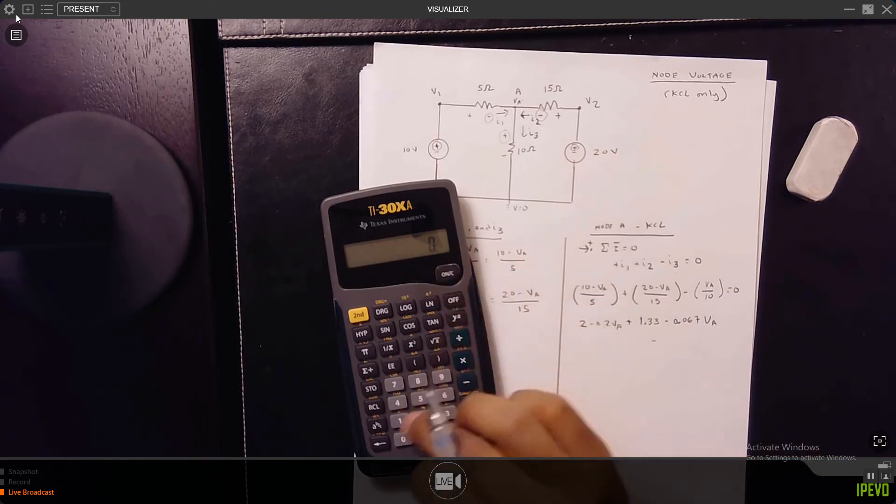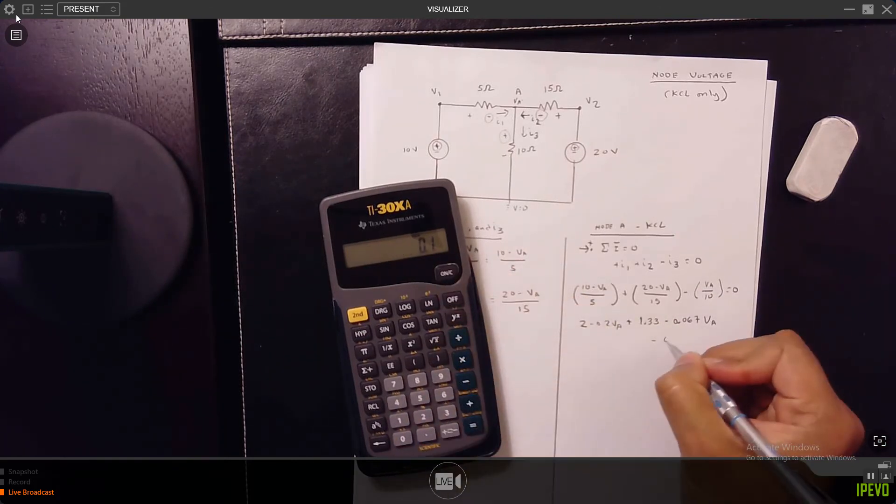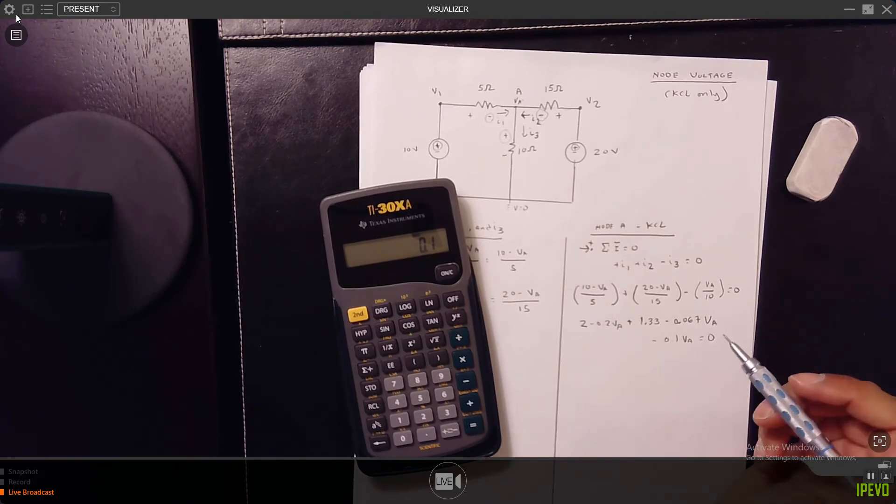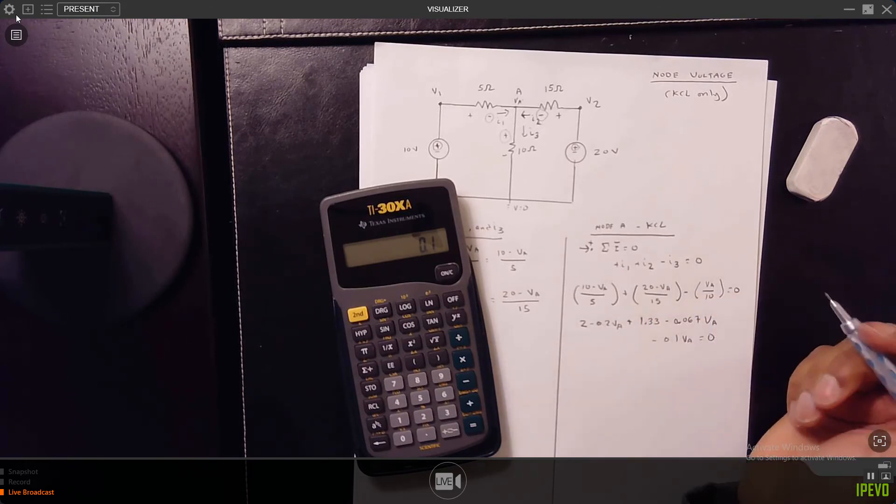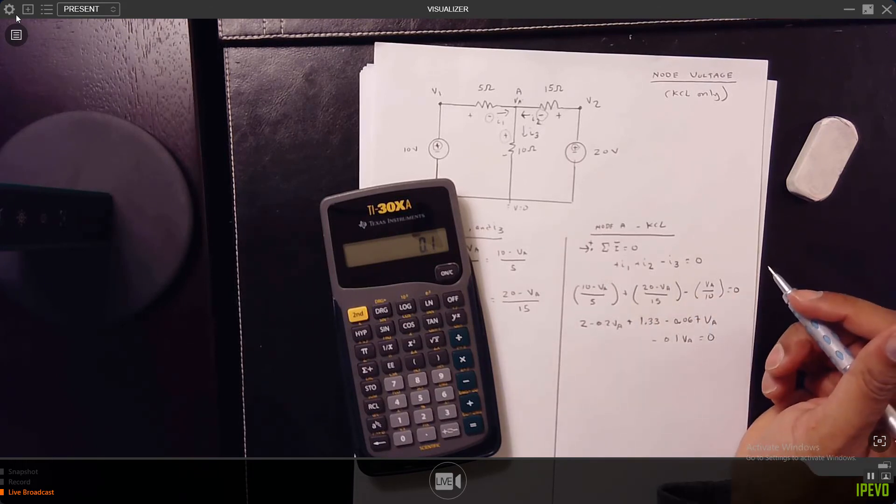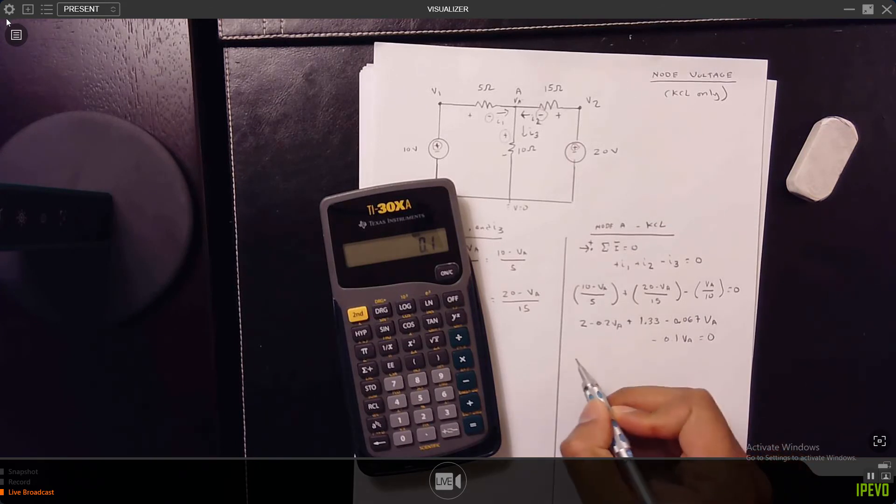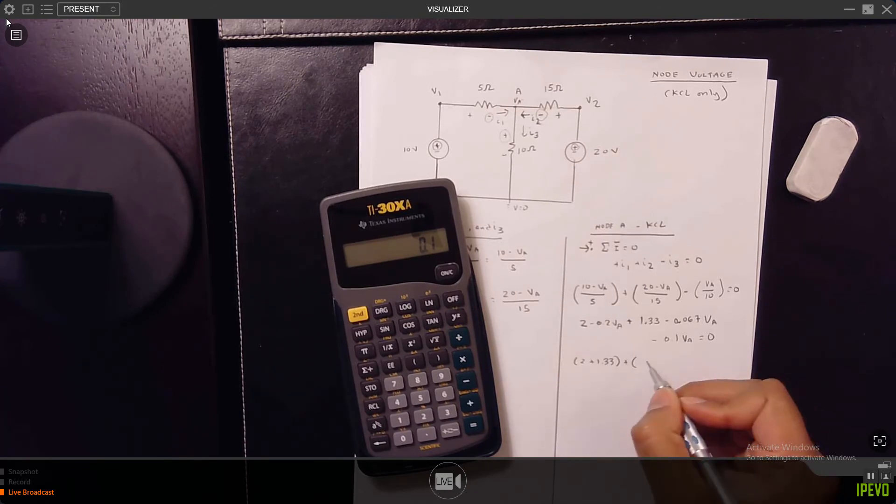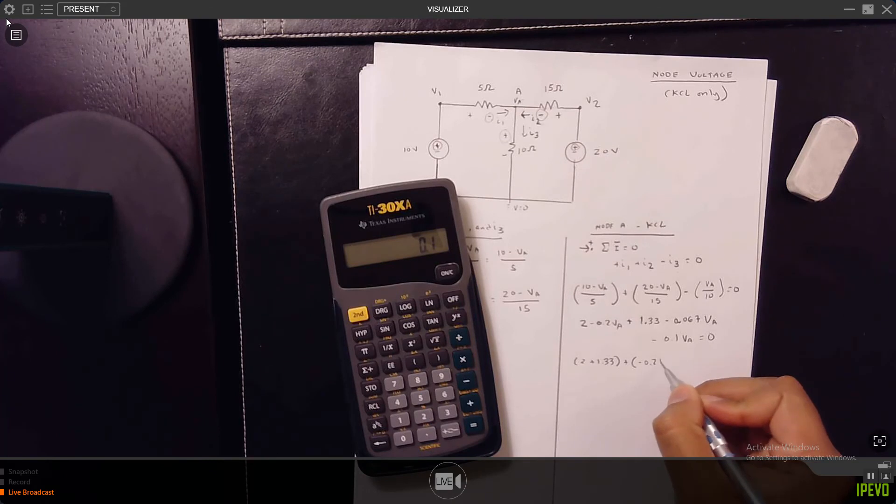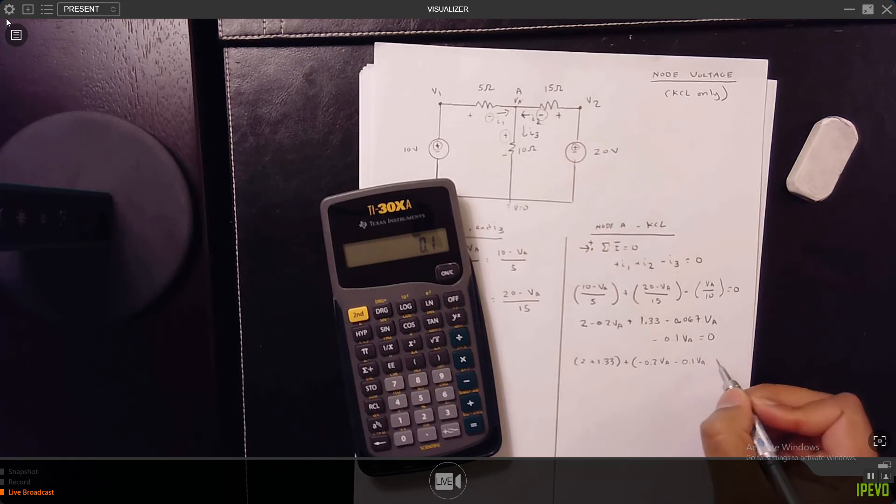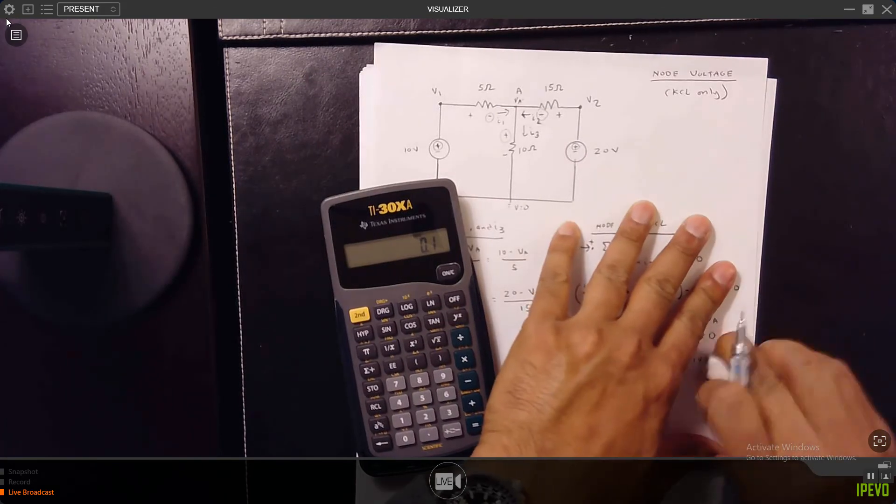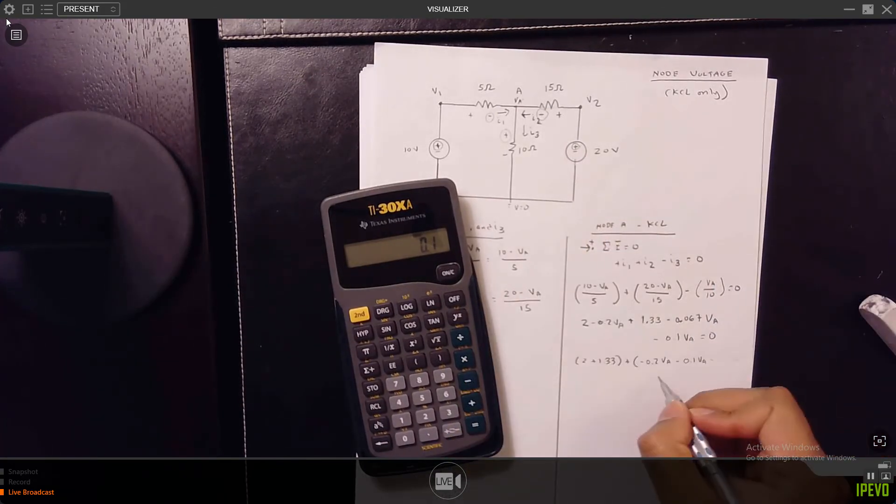Assuming a 1 in front of VA, what is 1 over 5? 0.2. Plus 20 divided by 15 is 1.33. If you want to do this in fractions be my guest, I don't want to do this in fractions. 1 divided by 15 is 0.067, so this is minus 0.067 VA minus 0.1 VA equals 0.